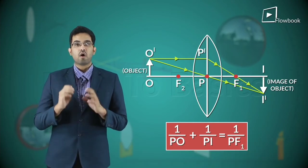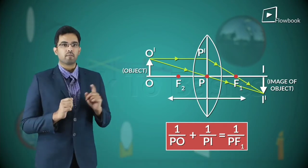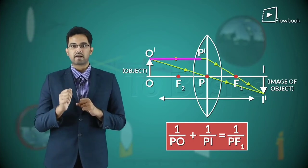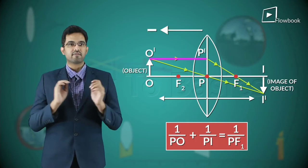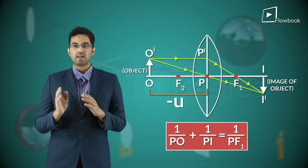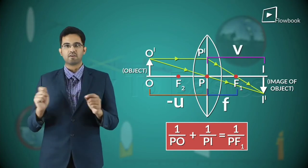We know that, according to this, all distances are to be measured from the pole, and if the distance is opposite in direction to the incident ray, then it will be negative. Therefore, here the object distance is minus U as it is opposite, while V and F are positive.